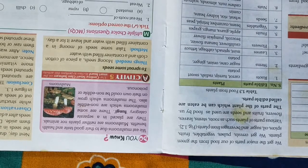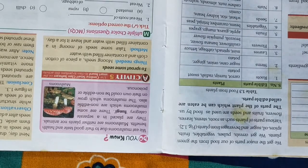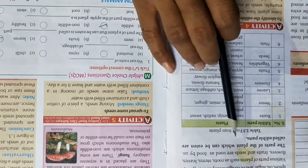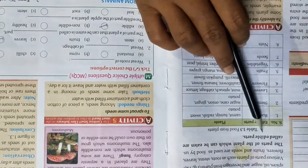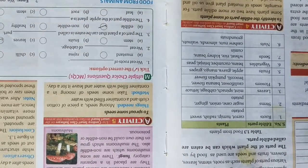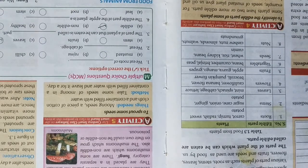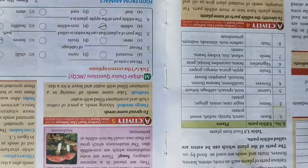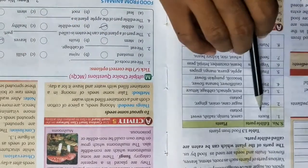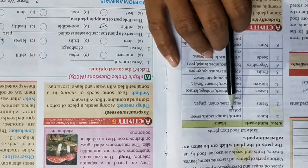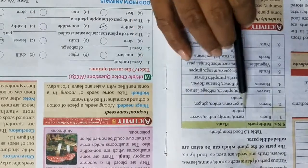Here is a table showing the parts of the plant which can be eaten, called edible parts. The parts of the plant which can be eaten are called edible parts, like flowers, fruits, leaves, stems, and roots.